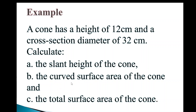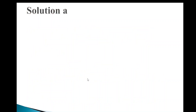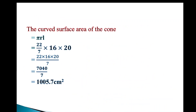Solution B: The curved surface area of the cone is πrl = (22/7) × 16 × 20. Multiplying 22 × 16 × 20 gives 7040, divided by 7. This gives the curved surface area in centimeters squared — the unit must be squared because it is area. That is the solution to B.